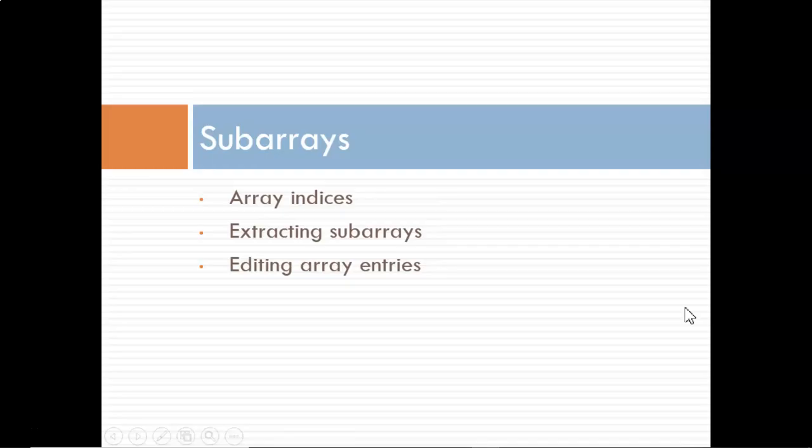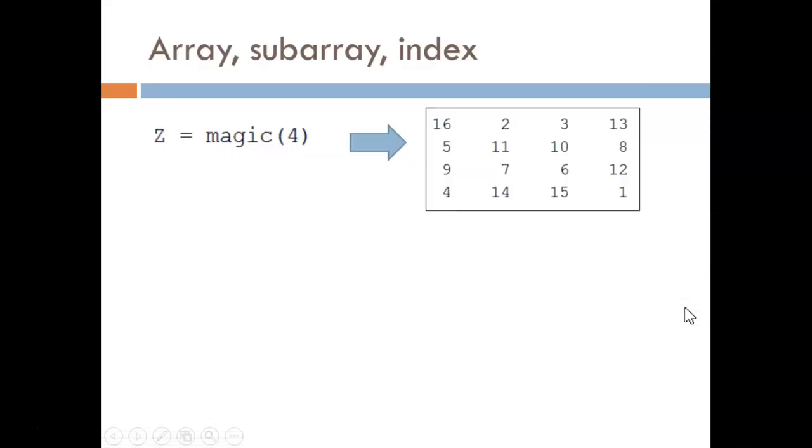Hello, this video is the start of a mini-series on subarrays. Here we see an example of matrix Z, which is 4 by 4, containing the 16 different values shown.